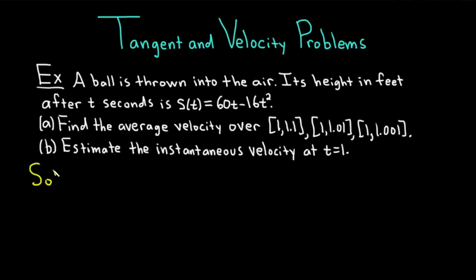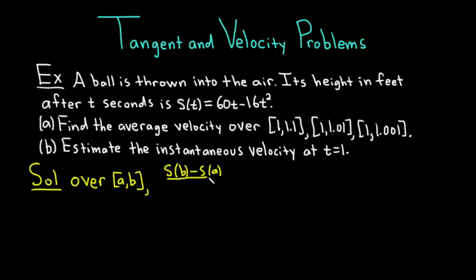Let's carefully work through this. The formula for the average velocity over an interval [A, B] is: [S(B) − S(A)] / (B − A). This is the formula for average velocity — it's the change in position over the time elapsed. In the numerator you have the position function evaluated at B minus the position function evaluated at A, and in the denominator you have the time elapsed, B − A.